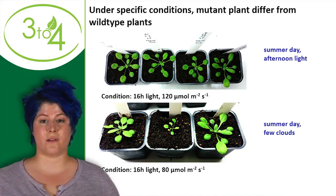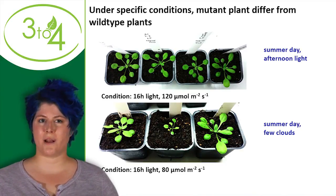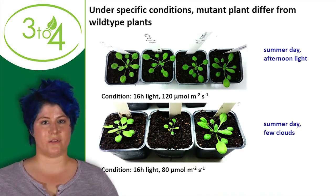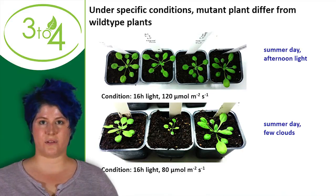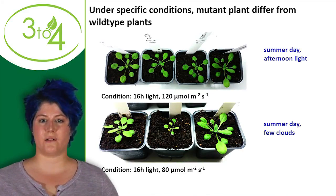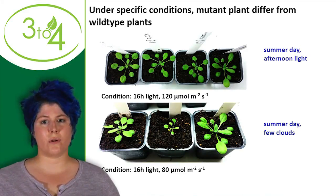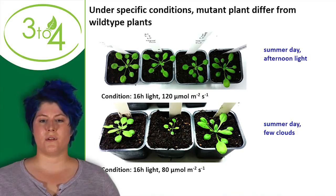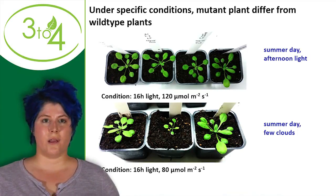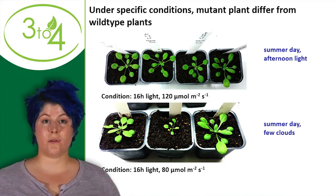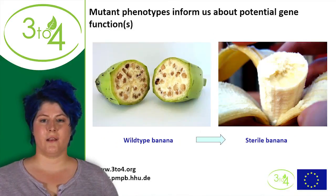Under those bright conditions you cannot tell the mutants and the wild type apart — they all look the same. But if you go to the bottom picture and add some clouds, so the light intensity goes down to about 80 micromoles per square meter per second, they no longer look the same. The mutant in the middle looks very small and is doing poorly, while the mutant on the left is doing quite well — almost as well as the wild type. A phenotype can inform you about what a gene actually does.